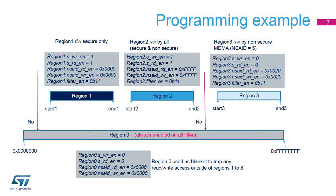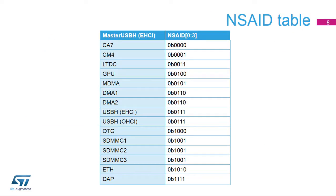The register settings and programming sequence are for WREN and RDEN parameters. NSAID values are listed in the table on the next slide. Region 0 is always enabled and covers the full DDR address space. It is set as a blanket to trap any access outside of these regions. Hence, no access is allowed outside of the three defined regions. Non-secure master address ID, or NSAID, is encoded on 4 bits, according to the master as listed in this table.